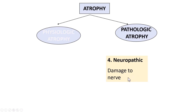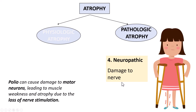Neuropathic atrophy — for example, damage to nerves. The common example you can think of is poliomyelitis. Polio is a disease which can cause damage to the motor neurons, leading to muscle weakness and atrophy. That muscle weakness and atrophy is because of the loss of nerve stimulation. This is an example of pathologic atrophy, which is neuropathic atrophy.